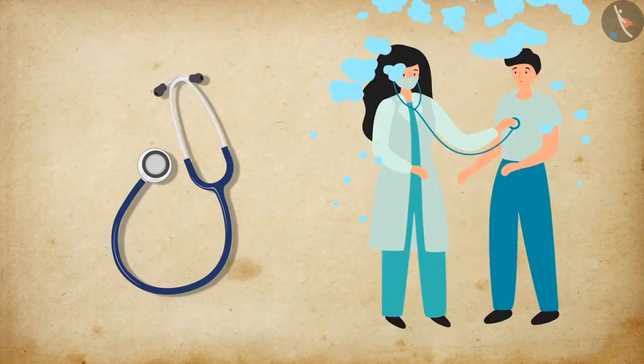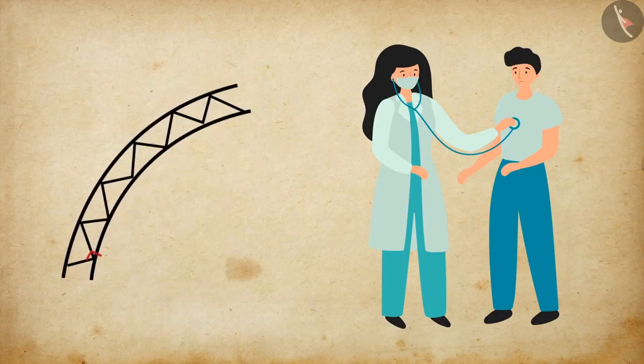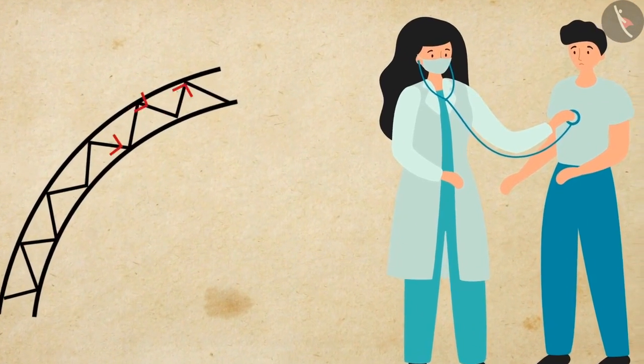Stethoscope, which is used by doctors to listen to the sounds of the heart and the lungs in the human body, is another example of multiple reflection. Here, the sound reaches the doctor's ear after going through multiple reflections.